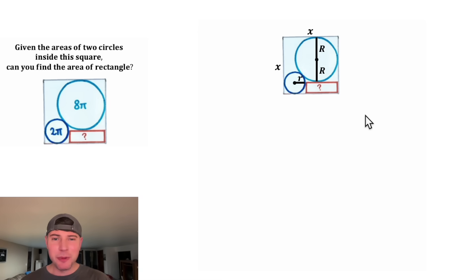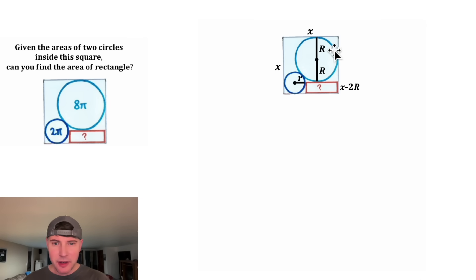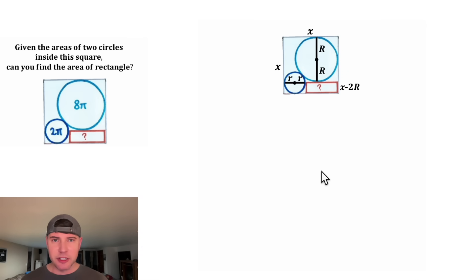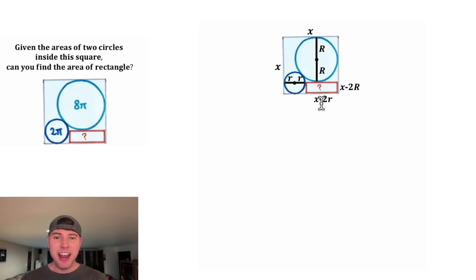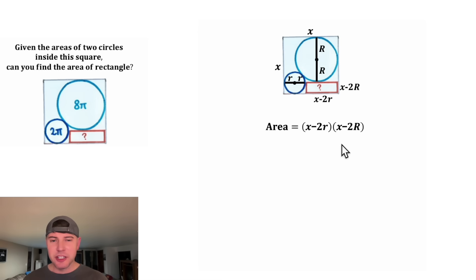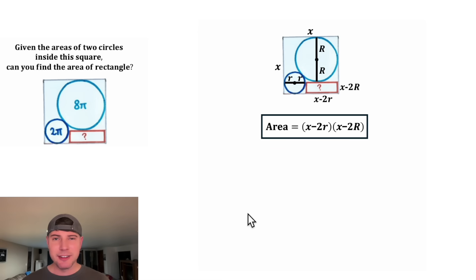The height of the question mark rectangle is going to be the whole height X minus two big R. And if we draw another radius of the little circle, we'll have another little r. Now we have the width of our rectangle — it'll be the whole distance X minus two little r. And the area of this rectangle is going to be base times height: X minus two little r times X minus two big R. This looks important — let's put a box around it.